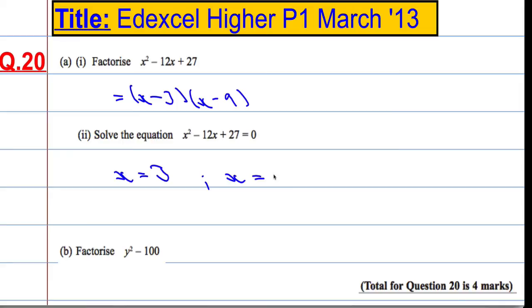And x equal to 9 will also make this equal to 0. Because if that was 9, 9 take away 9 is 0. 0 times this, doesn't matter what it is, will be 0. And that also is equal to 0.